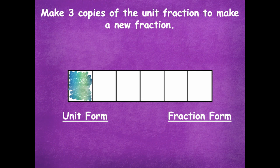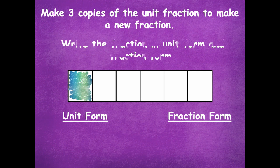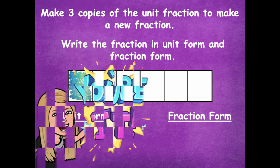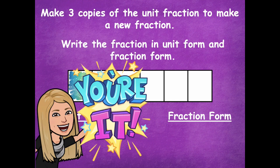Now we're going to make three copies of our unit fraction to make a new fraction. You have your one unit already shaded — you're going to make three more copies. Shade those in, then write it in unit form and fraction form. Pause the video, shade three copies, write in both forms, and then click play when you're ready to go over it together.